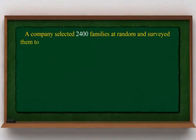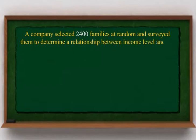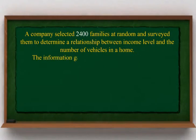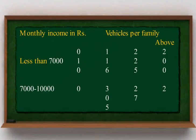A company selected 2400 families at random and surveyed them to determine a relationship between income level and the number of vehicles in a home. The information gathered is listed in the table below, showing monthly income in rupees against vehicles per family: 0, 1, 2, and above 2.